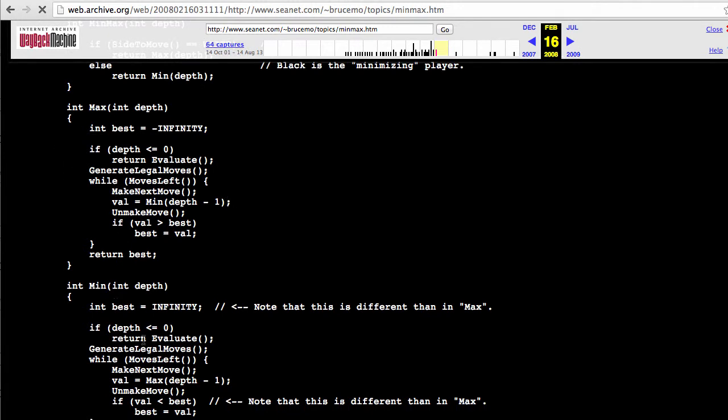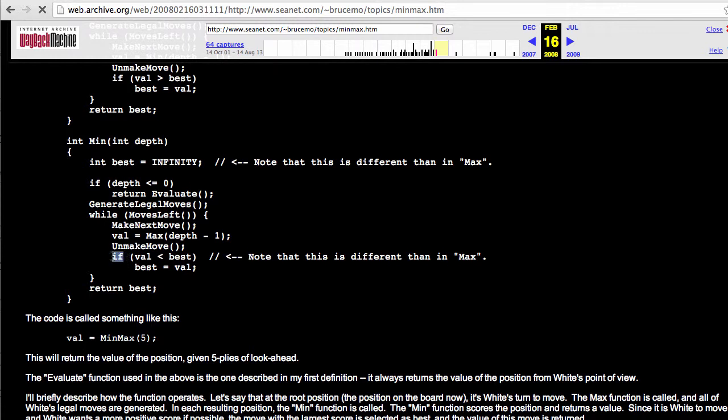And the way it works is, as it says here, if a side to move is white, you return as the maximizer the result of max, otherwise as black, the minimizer. And then you have a couple of functions here. I won't go through them in detail because we're going to talk on some slides in a minute about that. But basically the maximize function says, if the value we get back from our search is better than our best score so far, then set that value, and the minimizer does exactly the opposite.